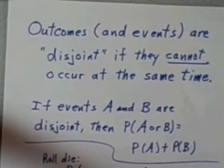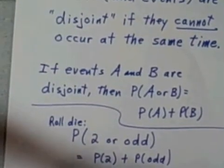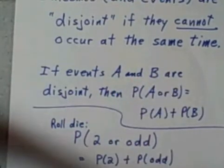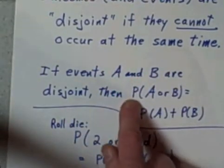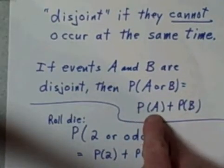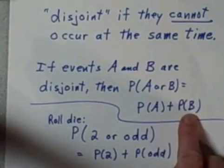And we have a real simple formula, if you need one, to calculate the probability of one event or another event happening. It's a simple formula if the two events are disjoint. The formula says if events A and B are disjoint, then the probability that one or the other will happen is simply the probability of the first one plus the probability of the second event. We simply add their probabilities together.